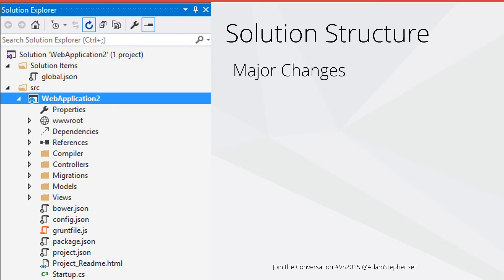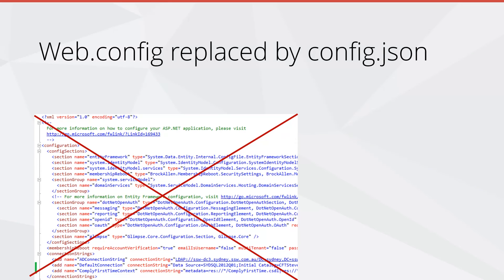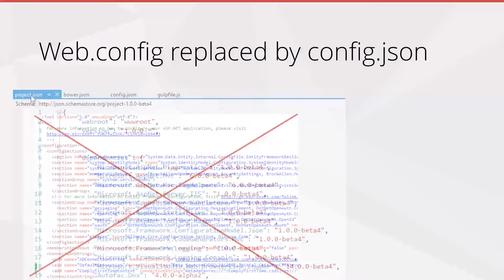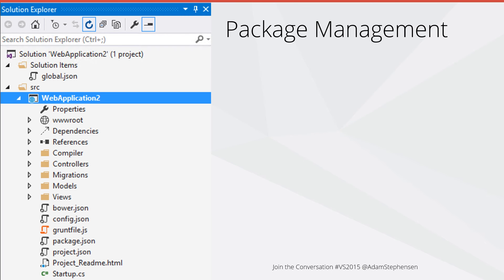There are major changes to the solution structure, which we'll have a look at in a future video. We used to have XML config files — these are gone now, and in their place we've got JSON-based config files. For example, web.config has been replaced by config.json.